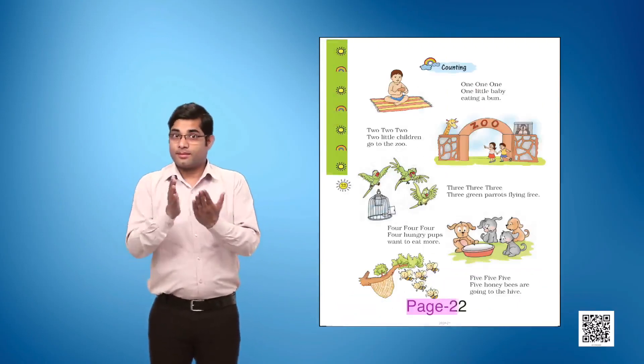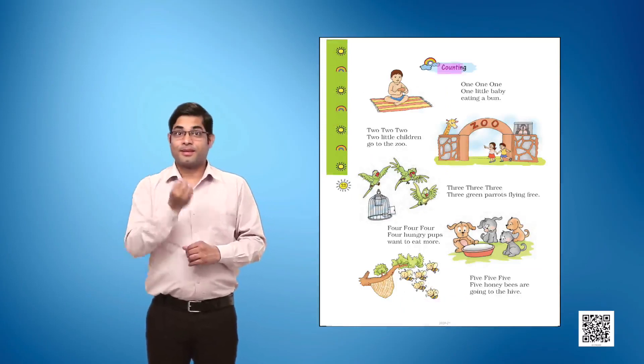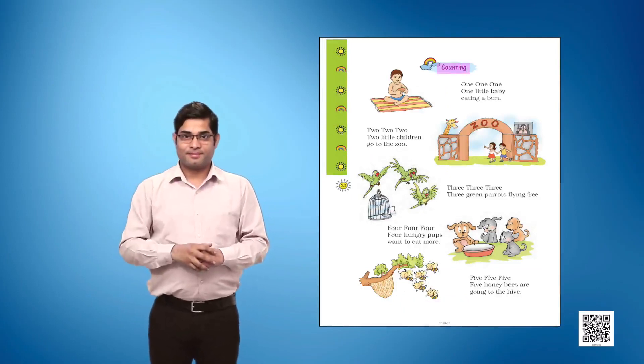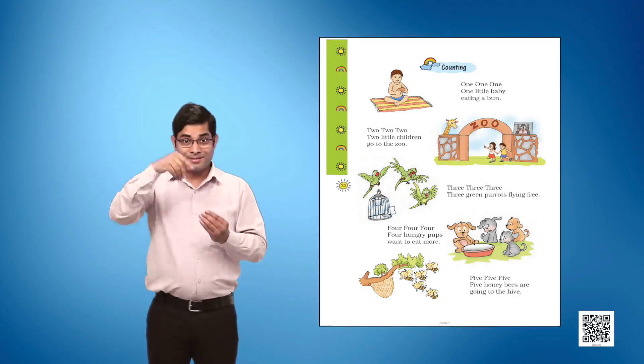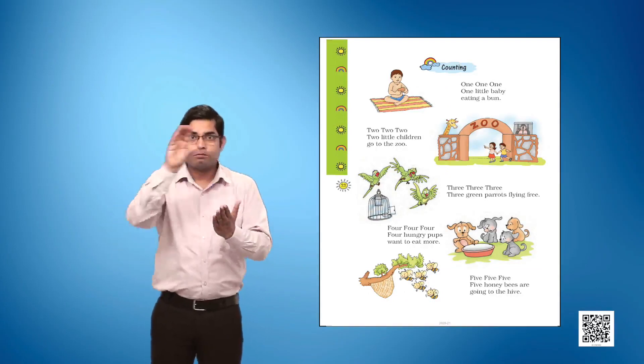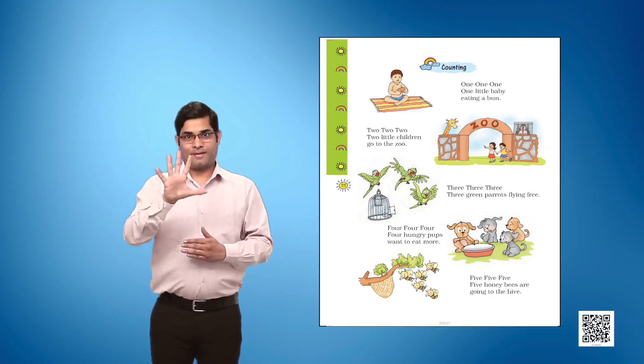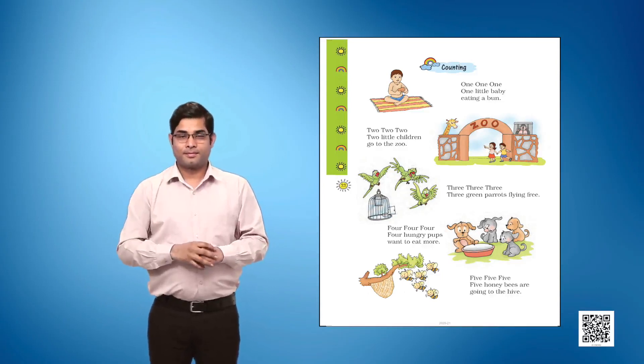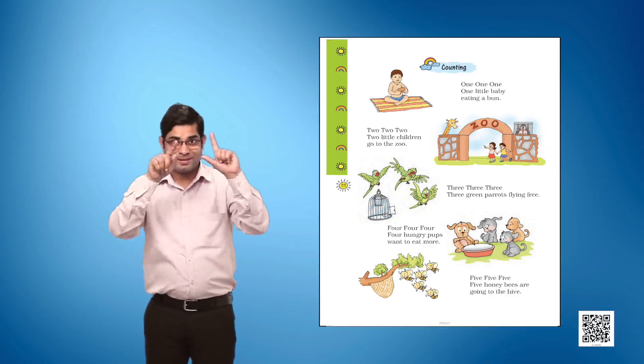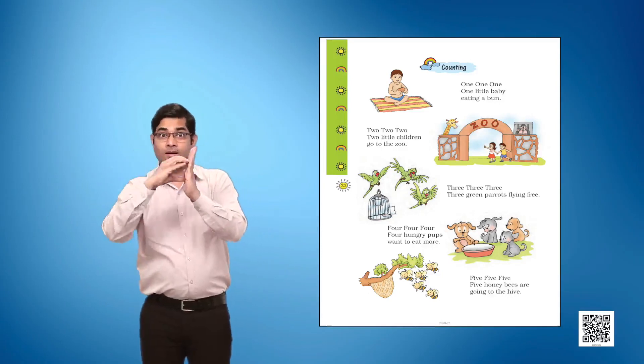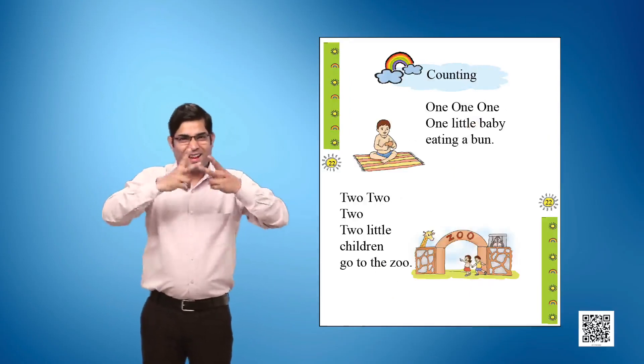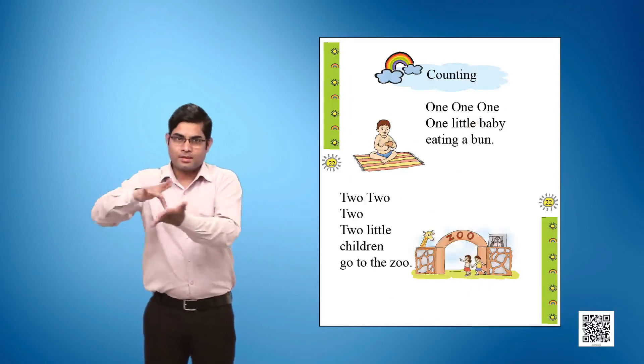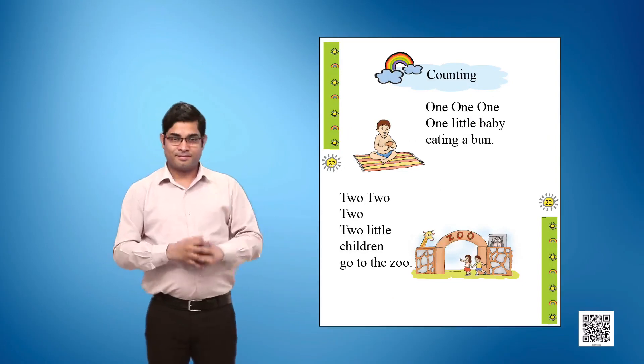Page number 22: Counting. This page is divided into 5 parts. Each part has a picture and some text. Let's become familiar with animals, objects and places mentioned on this page.